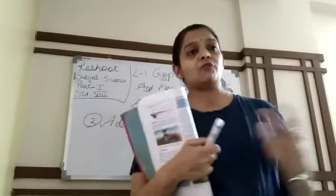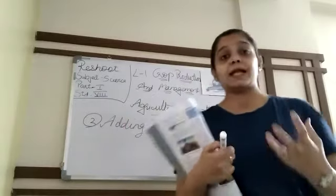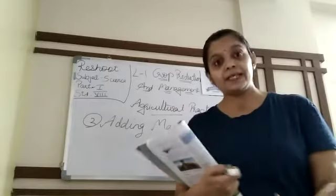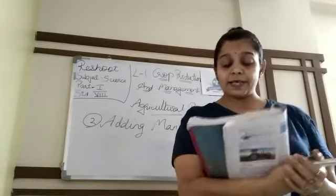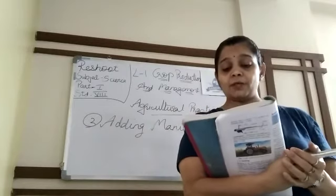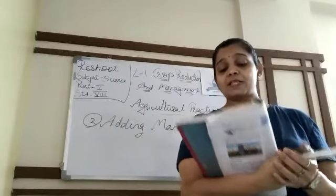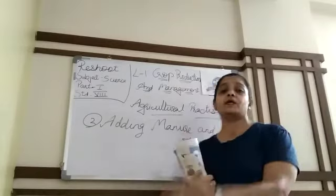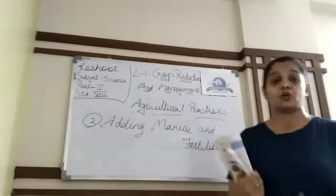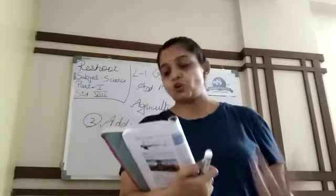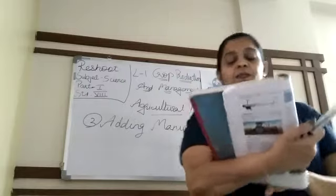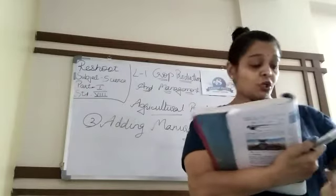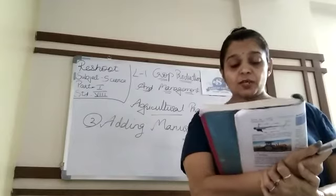Manure and fertilizer se plant ka growth achcha hoga. You may have seen healthy crop growing in one farm, while in a neighboring farm the plants were weak. Why do some plants grow better than others? Because there is a deficiency — of manure, nutrients, or fertilizer. Therefore, soil supplies minerals and nutrients to the crop plants, which are essential for the growth of plants.